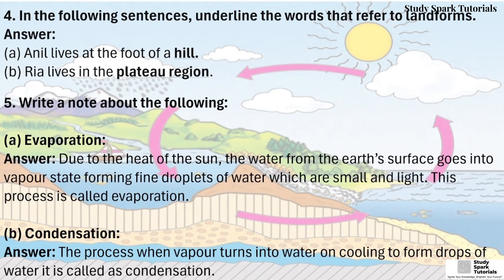Question 4: In the following sentences, underline the words that refer to landforms. Answer: 'Anil lives at the foot of the hill.' 'Rhea lives in the plateau region.' The highlighted parts are the landforms.